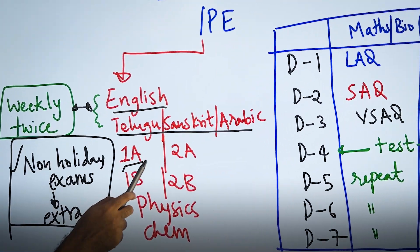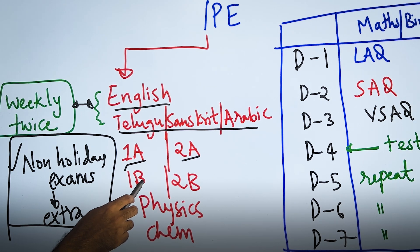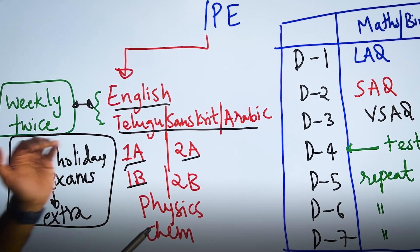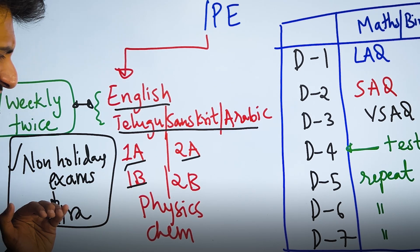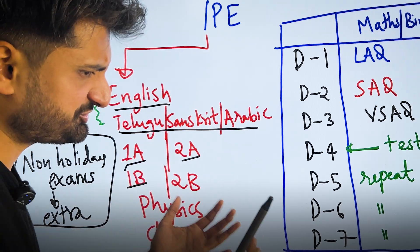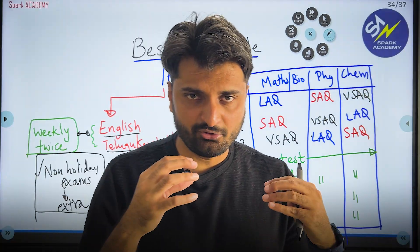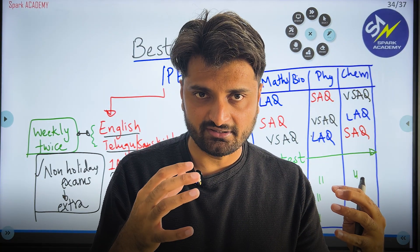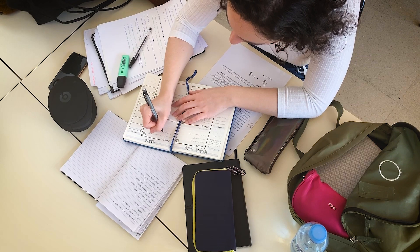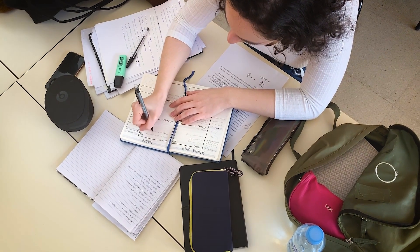For core subjects: first year students have 1A, second year have 2A; first year have 1B and second year have 2B. Then Physics and Chemistry, or for Biology students, Botany and Zoology. Every day you should be covering a split of LAQs, SAQs, and VSAQs across your subjects.